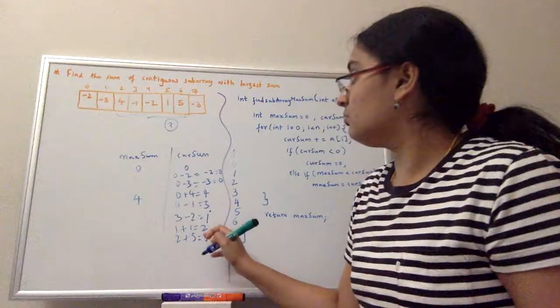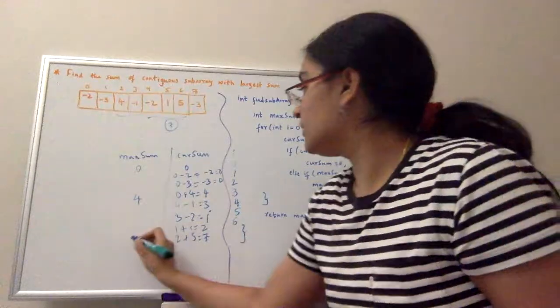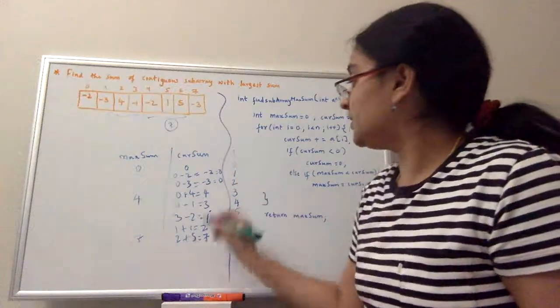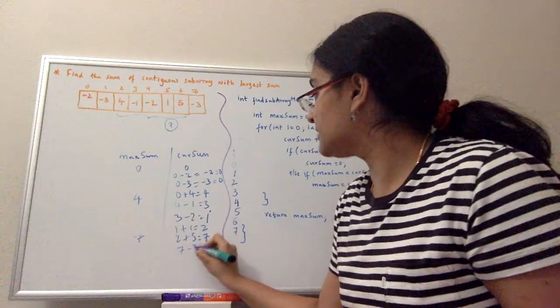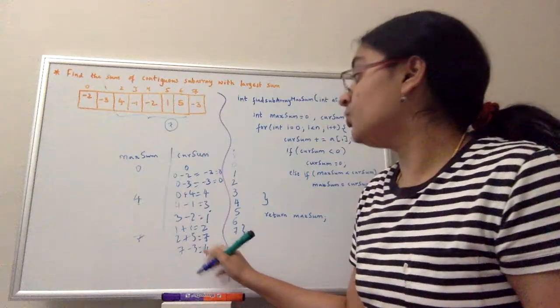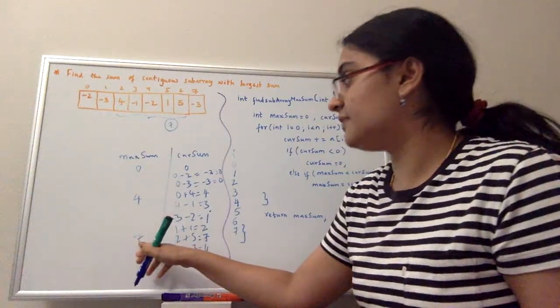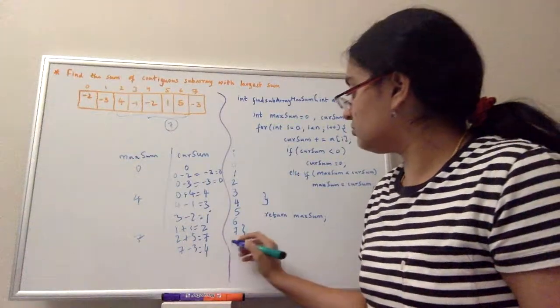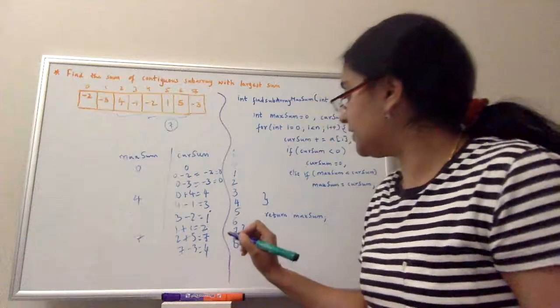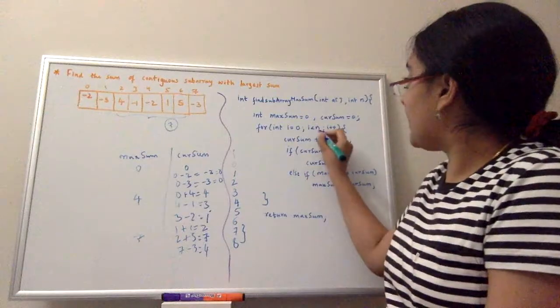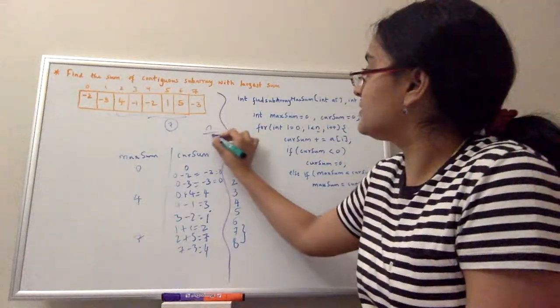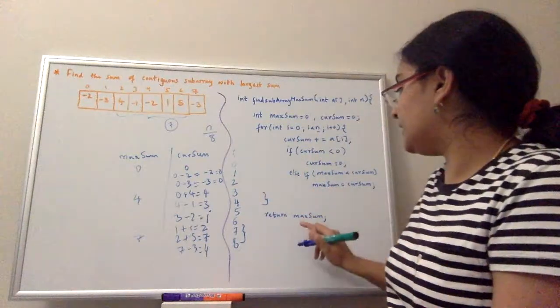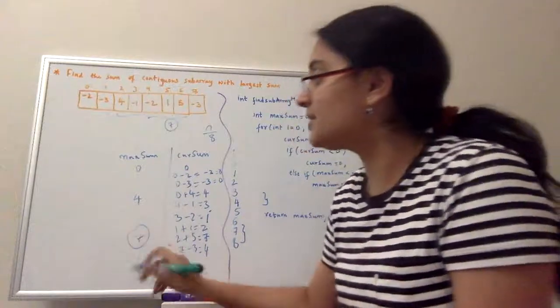Now max sum is less than the current sum, so we will assign 7 to the max sum and increment the pointer. And when we come to the last array element, it is 7 minus 3 equal to 4. 4 is not greater than 7 so we don't change the max sum. Now the counter is incremented to 8 because my array size, my n value, is 8. 8 is not less than 8 so it will come out and it will return the maximum sum, and maximum sum has 7.